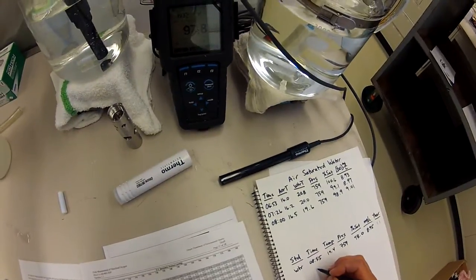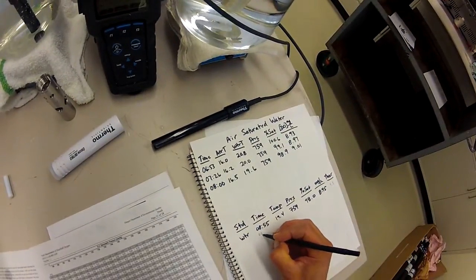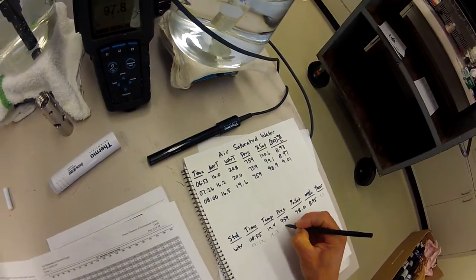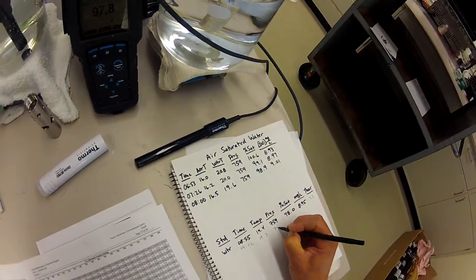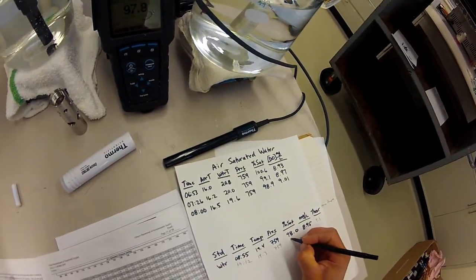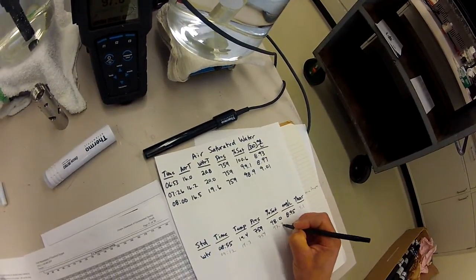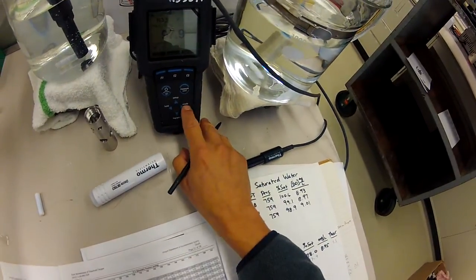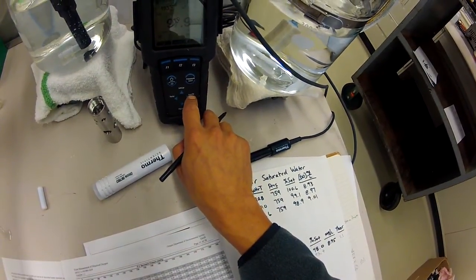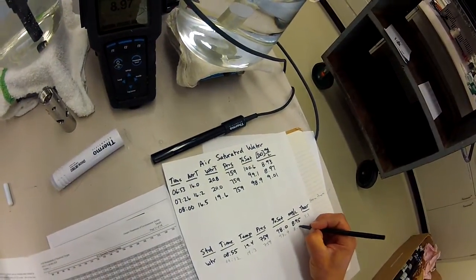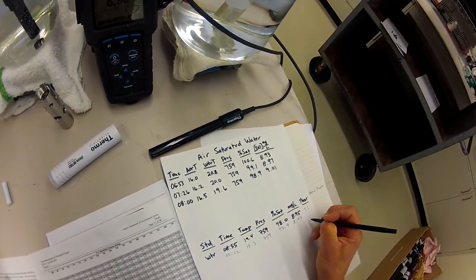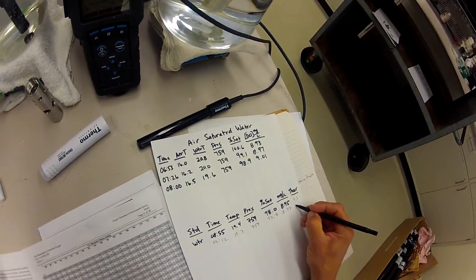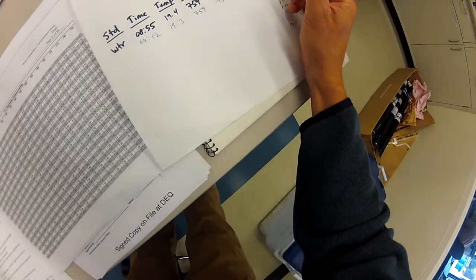Our time is 9:12, our temperature is 19.3, barometric pressure is 759, percent saturation 97.9, and we'll change the mode to get milligrams per liter, 8.97. We've calculated that this theoretical is going to be right around 9.1.